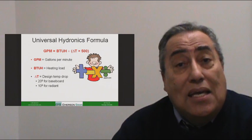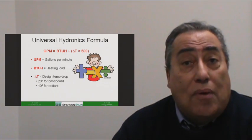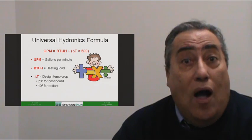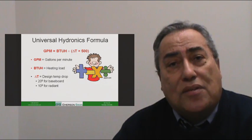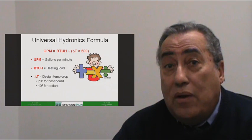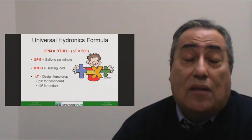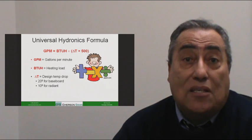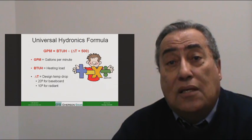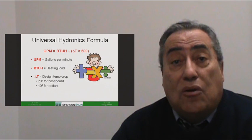The Delta T is the design temperature drop across that system on the coldest day of the year. In a baseboard series loop system, we design around a 20-degree Delta T. Assuming the water temperature goes out at 180 degrees, it would come back at 160 degrees. This is the traditional design for standard baseboard.